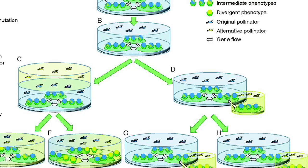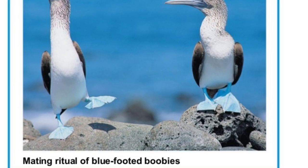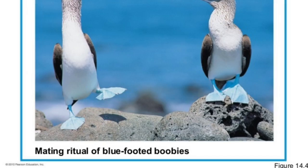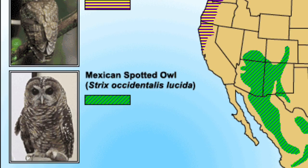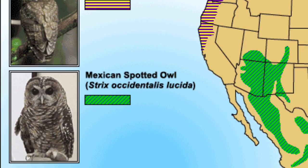Behavioral isolation is a form of reproductive isolation in which two populations develop differences in courtship rituals or other behaviors that prevent them from breeding. Geographic isolation is a form of reproductive isolation in which two populations are separated by geographic barriers such as rivers, mountains, or bodies of water, leading to the formation of two separate subspecies. Temporal isolation is a form of reproductive isolation in which two or more species reproduce at different times.